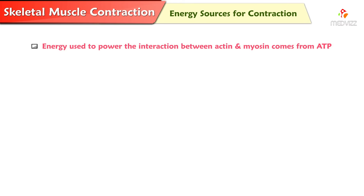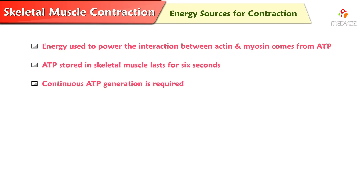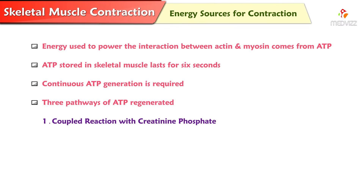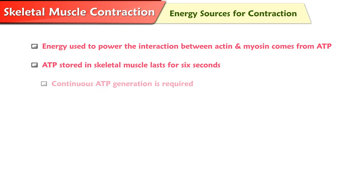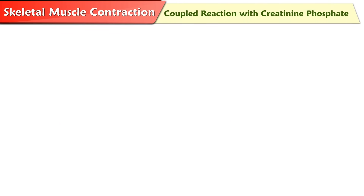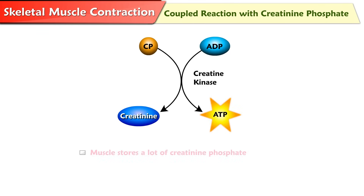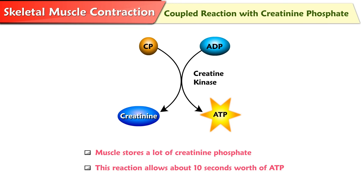Energy sources for contraction. The energy used to power the interaction between actin and myosin comes from ATP. ATP stored in skeletal muscle lasts only about 6 seconds, so ATP must be regenerated continuously if contraction is to continue. There are three pathways: coupled reaction with creatine phosphate, anaerobic cellular respiration, and aerobic cellular respiration. Creatine phosphate plus ADP produces creatine plus ATP. Muscle stores a lot of creatine phosphate, and this coupling reaction allows for about 10 seconds worth of ATP.